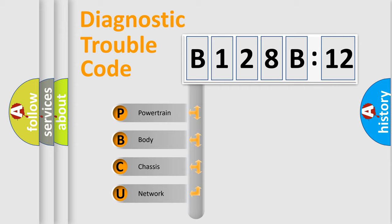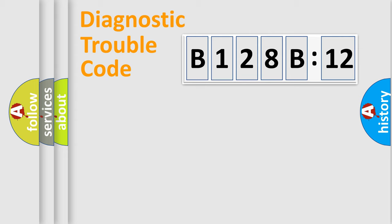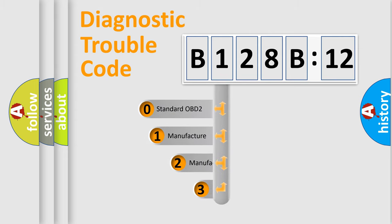We divide the electric system of automobiles into four basic units: powertrain, body, chassis, and network. This distribution is defined in the first character code.